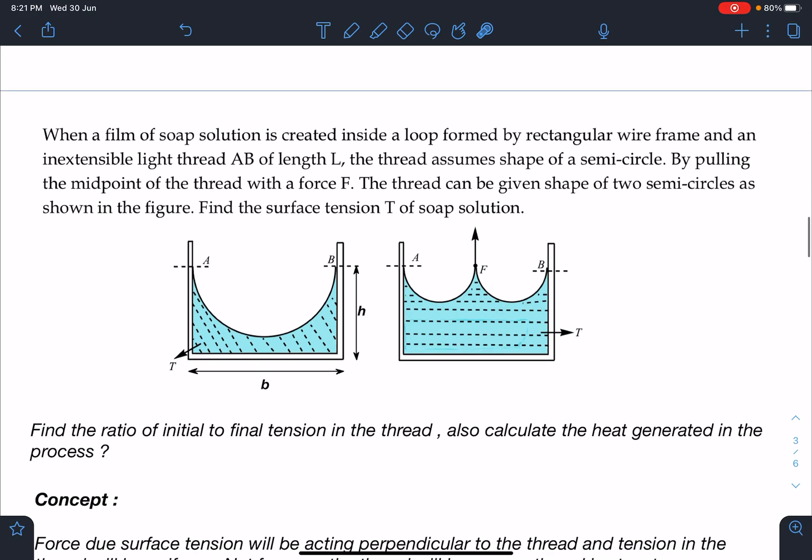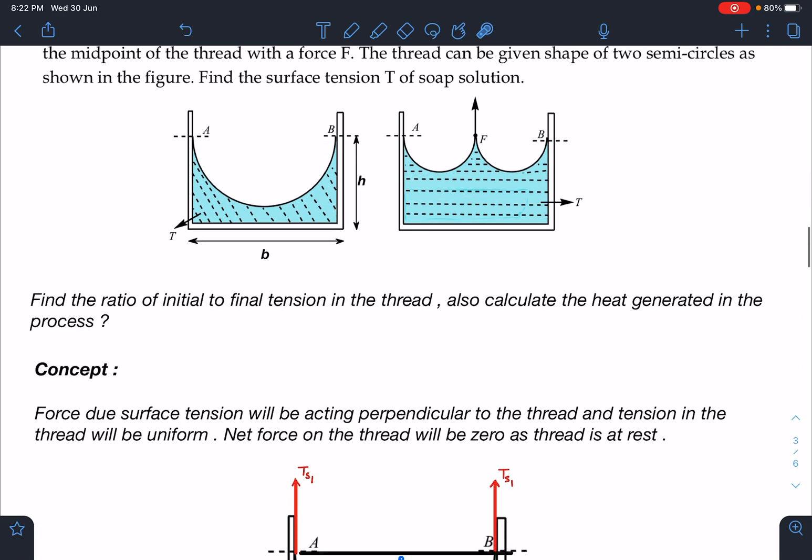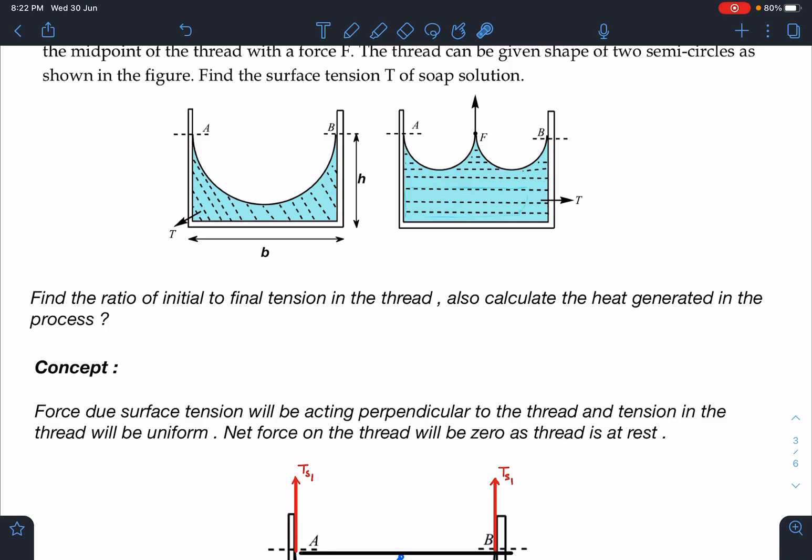So here is the problem statement. When a film of soap solution is created inside a loop formed by a rectangular wireframe and inextensible light thread AB of length L, the thread assumes shape of a semicircle by pulling the midpoint of the thread with a force F. The thread can be given shape of two semicircles as shown in the figure. Find the surface tension of solution. So this is the situation given. I have added two parts in this. One is find the ratio of initial to final tension in the thread. Also calculate the heat generated in the process.